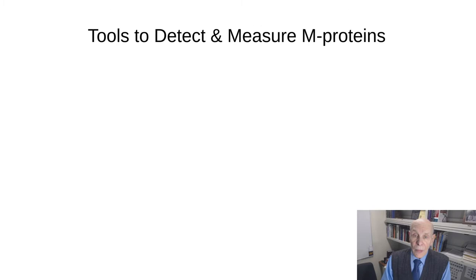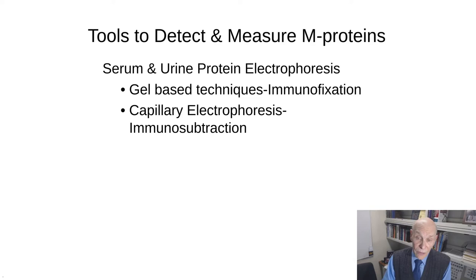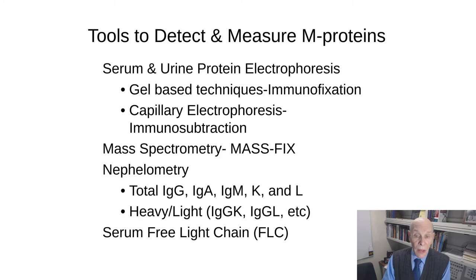What tools do we have in the laboratory? Electrophoresis — gel-based techniques have been around for over 100 years. We use immunofixation to characterize detected M proteins. Capillary electrophoresis is newer and uses immunosubtraction. Mass spectrometry is the new kid on the block to help characterize the M protein, though not for initial detection. Nephelometry or turbidimetry measures total IgG, IgA, IgM, kappa, and lambda. There's also a role for heavy light chain, and then there's the serum free light chain test, which we'll spend a good deal of time on today.